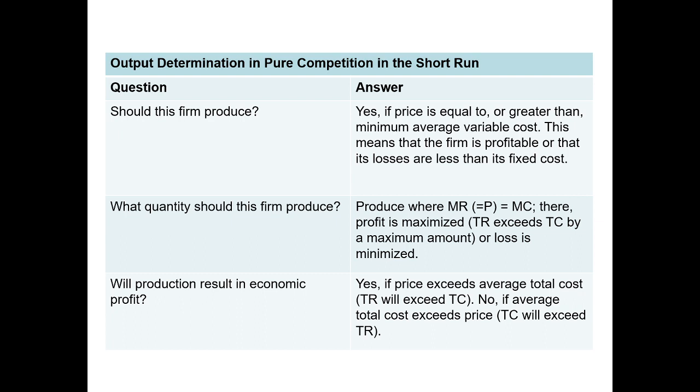Will production result in economic profit? If the price exceeds the average total cost, total revenue will exceed total cost. No if the average total cost exceeds price. So we will have an economic profit as long as P is greater than ATC. The minute price is lower than ATC, we will be at a loss.